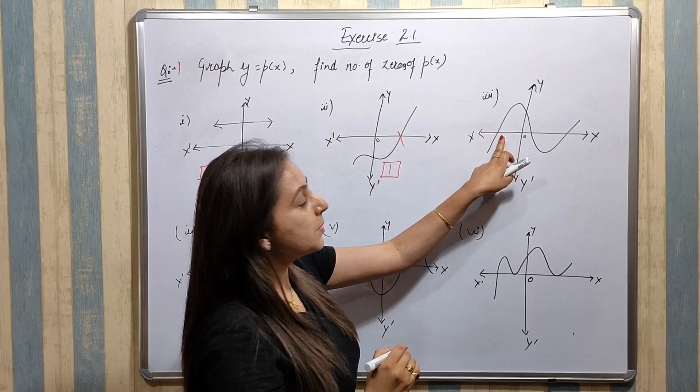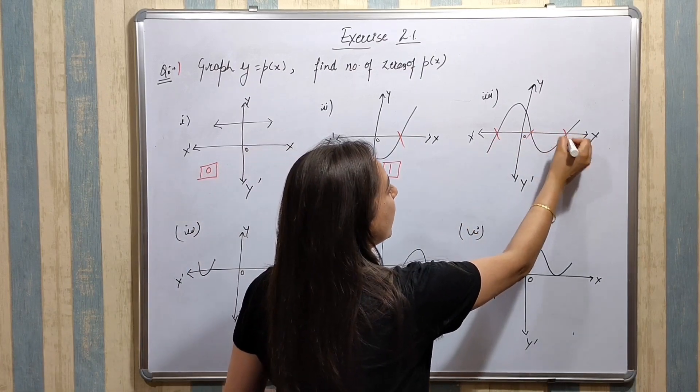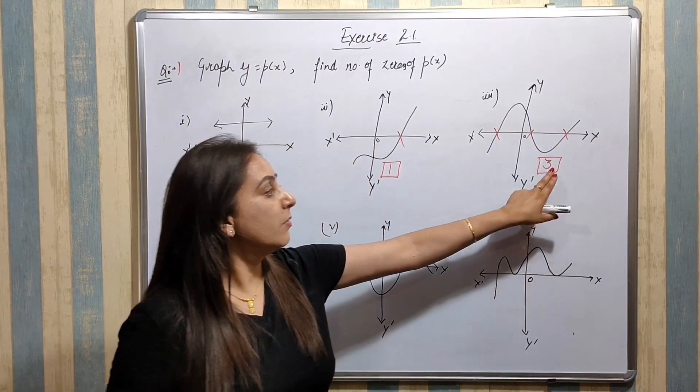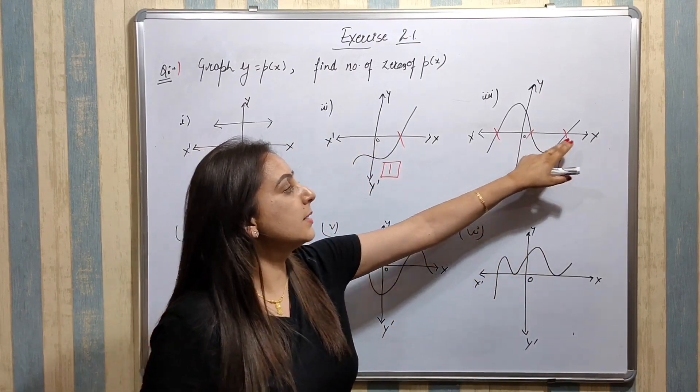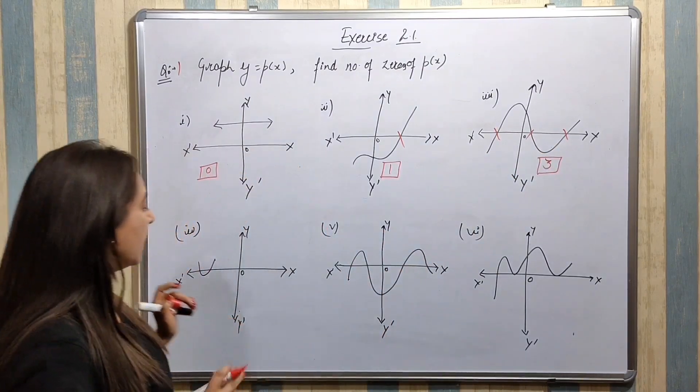Ab next example dhekho, ismae x-axis me kitni time intersect hua hai? One, two and three. Kitni nikal jayegi number of zeros? Three, why so? Kyunki three times x-axis me y is equals to p of x graph intersect hua hai.